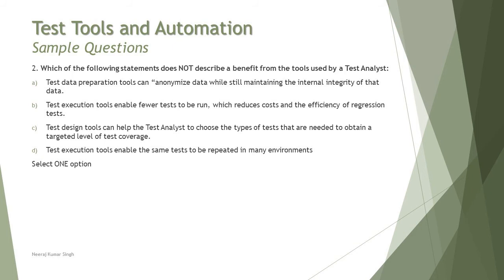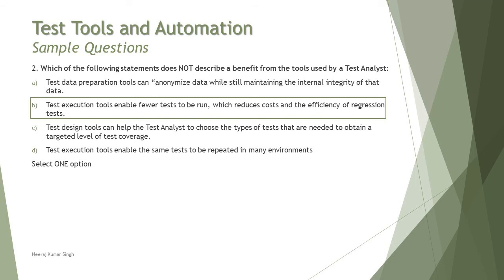We'll look at the remaining options before finalizing. Option C states that test design tools can help the test analyst choose the types of tests needed to obtain a targeted level of test coverage — that is a valid benefit, as design tools create test cases and determine coverage targets. Option D states that test execution tools enable the same test to be repeated in many environments — that is also a valid property of an execution tool. Therefore, the right answer is B. The first part of that statement is wrong; test execution tools actually enable more tests to be run, not fewer. You need to be critical and careful when reading the options.